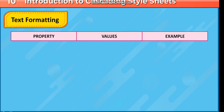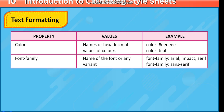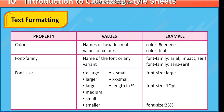Text formatting properties — Property: Color; Values: names or hexadecimal values of colors; Examples: color: #eeeeee, color: teal. Property: Font-family; Values: name of font or variant; Examples: font-family: Arial, Impact, serif; font-family: sans-serif. Property: Font-size; Values: x-large, larger, large, medium, small, smaller, x-small, xx-small, or length/percentage; Examples: font-size: large, font-size: 10pt, font-size: 25%.